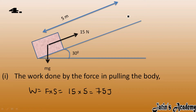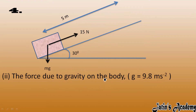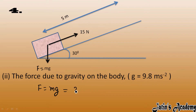Since force and displacement are in the same direction, we do not apply cosθ. Next, we calculate the force due to gravity on the block: F = m × g, where mass is 2 kg and g is 9.8, giving us 19.6 Newtons as the force due to gravity.